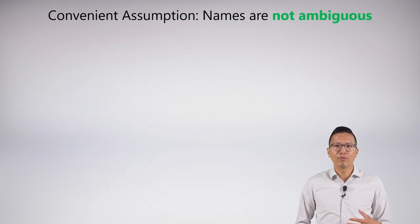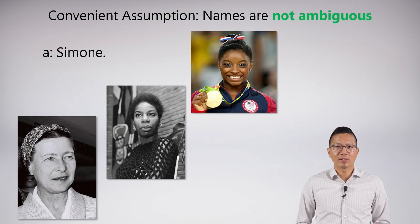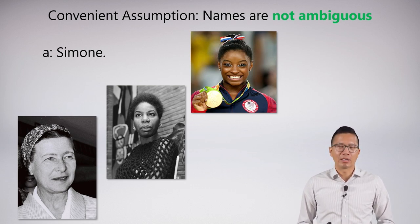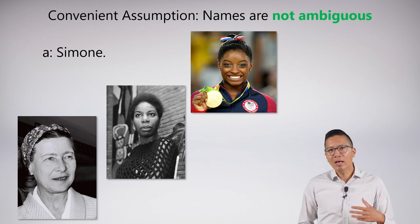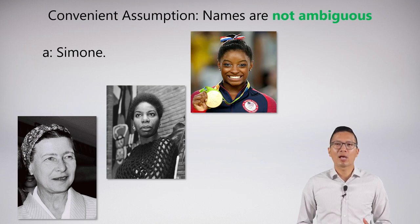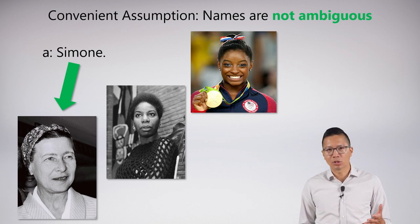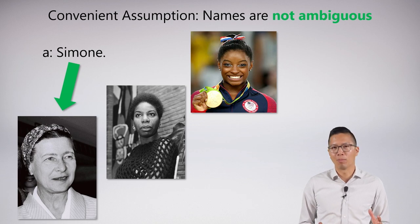We're also going to make a convenient assumption here. We're going to say that names are not ambiguous. So if I say Simone, we have a problem. There's lots of Simones out there in the world, and it's unclear who I'm really talking about. We can say, well, maybe context makes it clear, whatever. But we're just not even going to worry about that problem. We're going to pretend that when I invoke a name, it's not ambiguous at all. I'm just pointing to a particular individual, and we all know who that person is. This is a convenient assumption so we don't have to worry about these problems when we're just interested in crunching the logic.